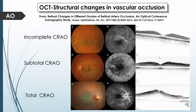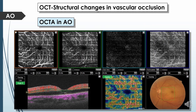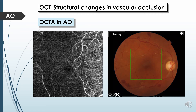OCT angiography in central retinal artery occlusion may carry artifacts such as motion artifacts due to improper fixation or projection artifacts in the deep capillary plexus due to significant hyperreflectivity of the inner retinal layer. In a patient with occlusive vasculitis secondary to Behçet's disease showing multiple arterial occlusions, OCT angiography demonstrates a big difference between the perfused and non-perfused areas.